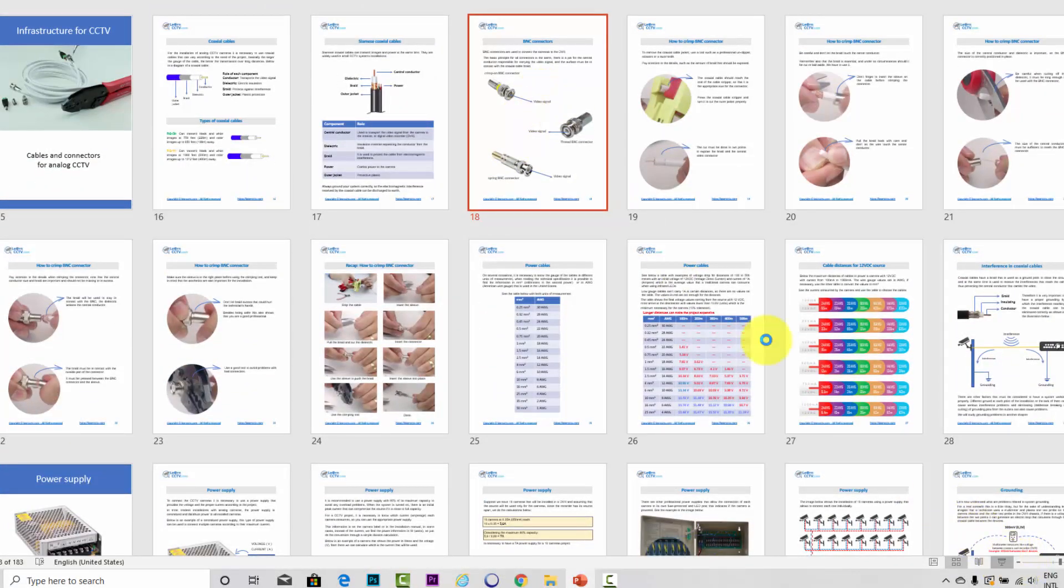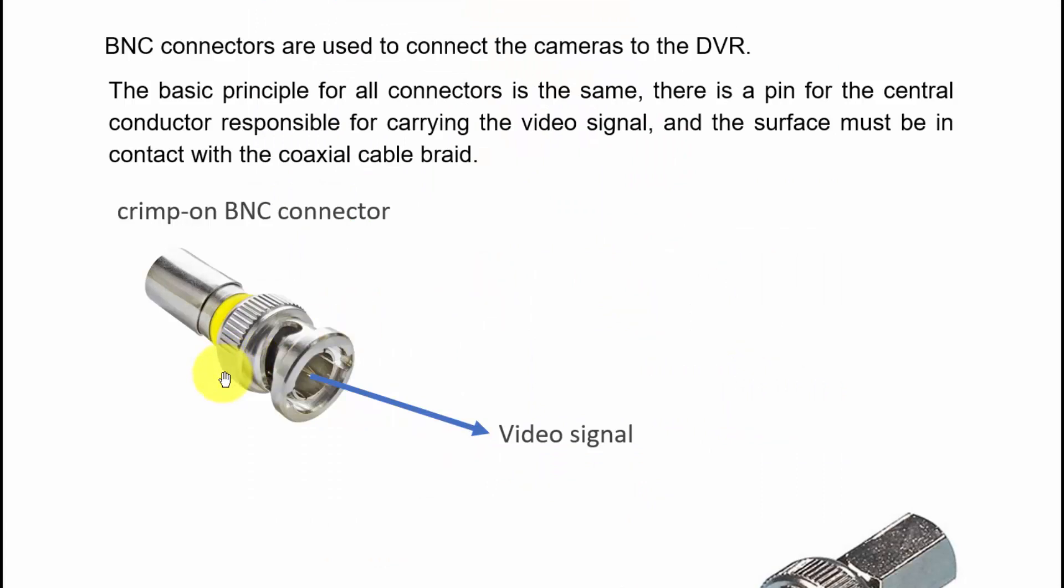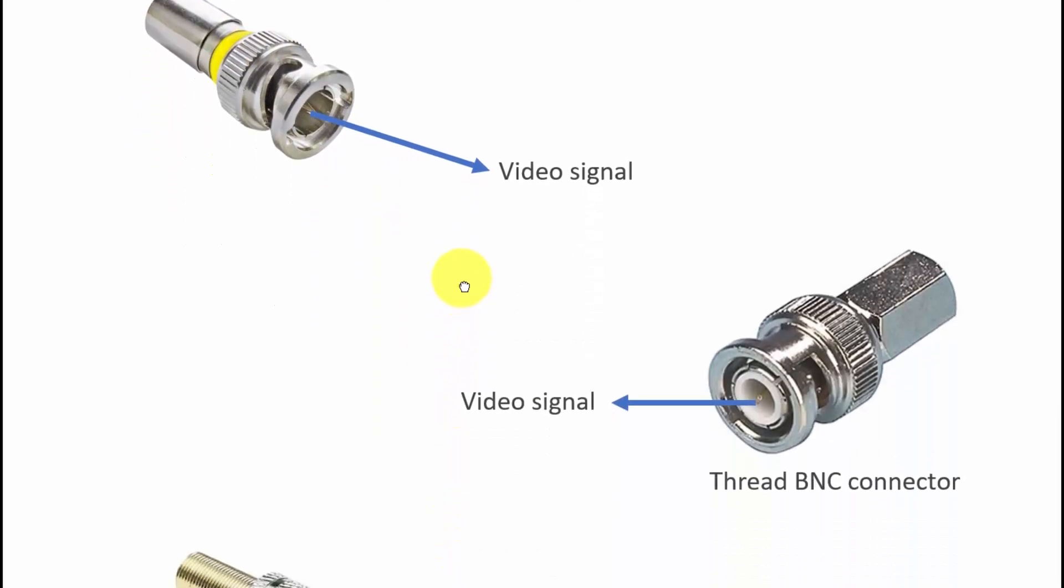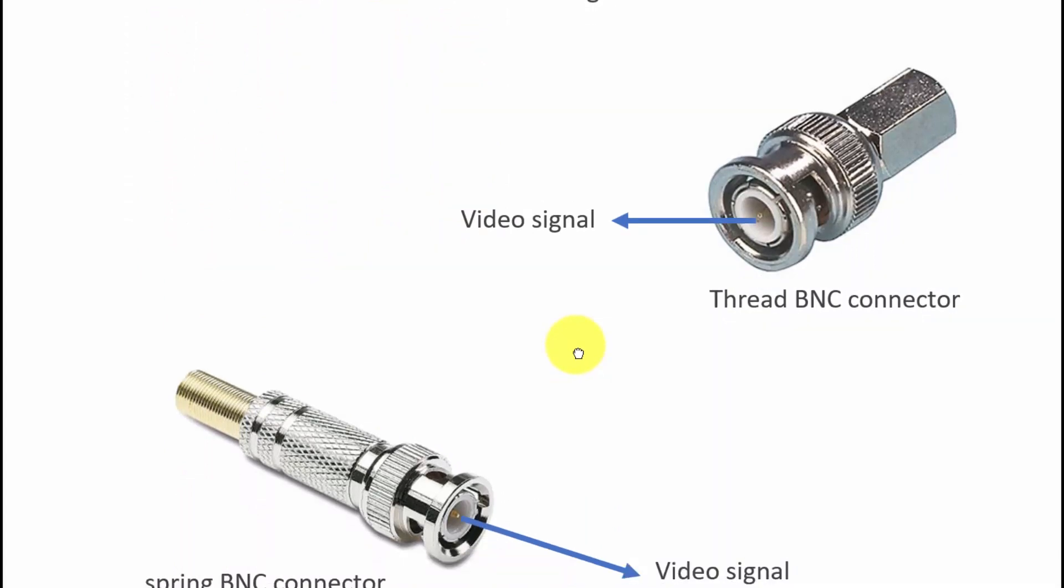Let's start talking about BNC connectors. I have here a presentation. This is a type of BNC connector. Here you have the video signal sending just in the center of the connector, and just right here is the part where you're gonna have your braid. Basically, here you have other types of connectors just like this one. The video signal is still here in the center.